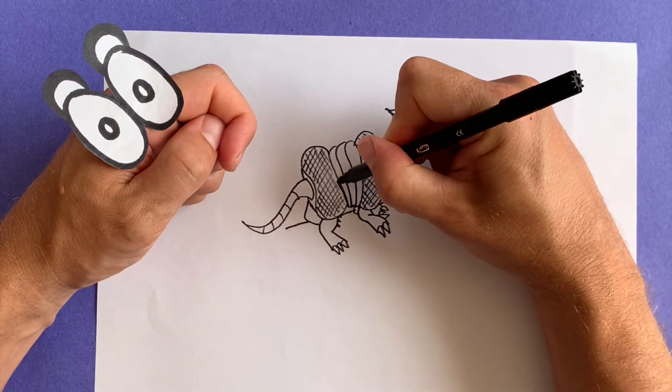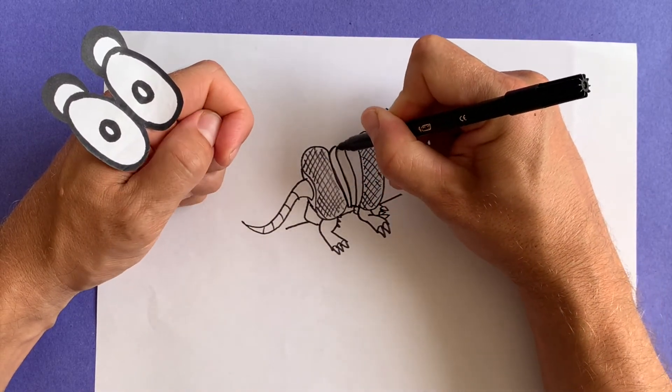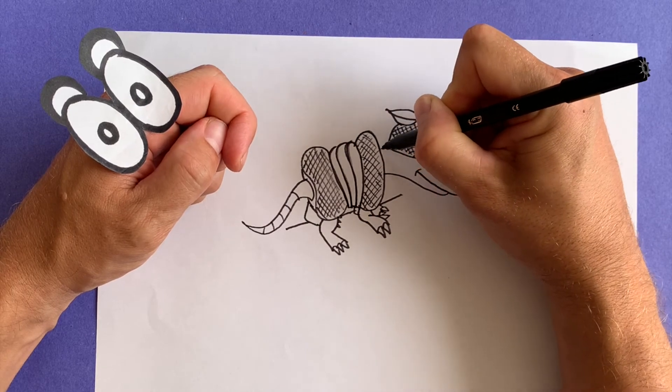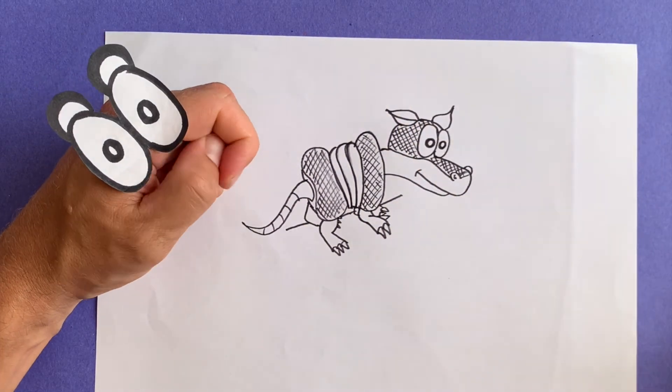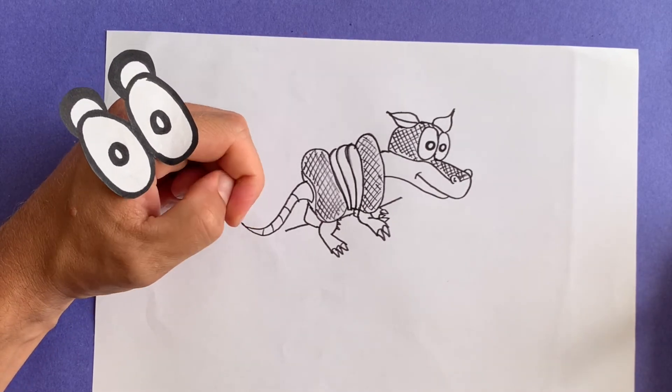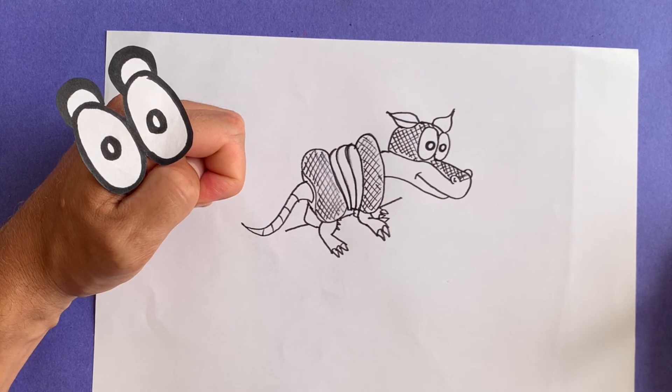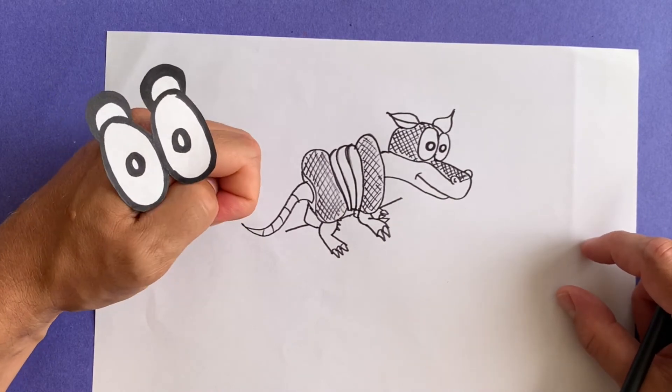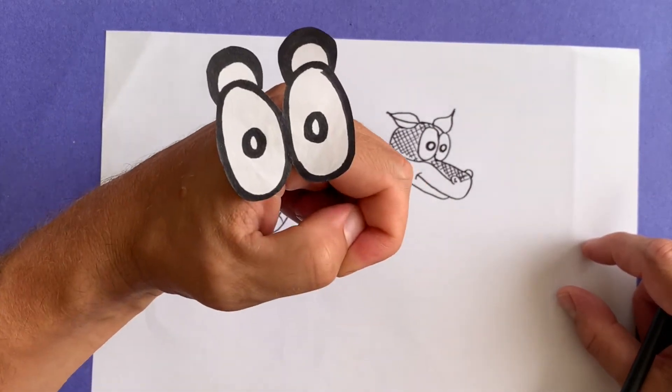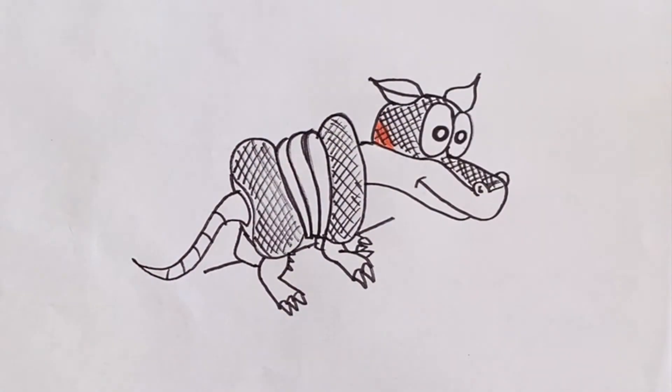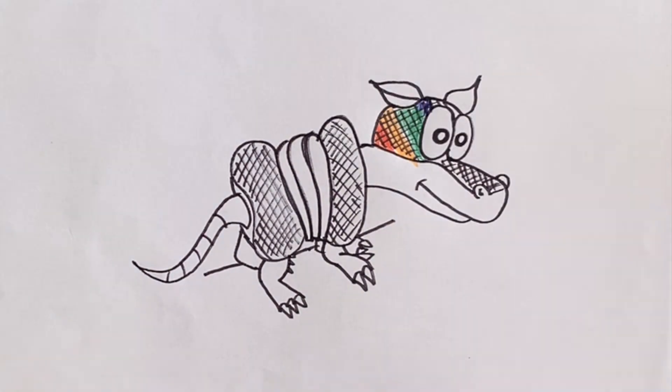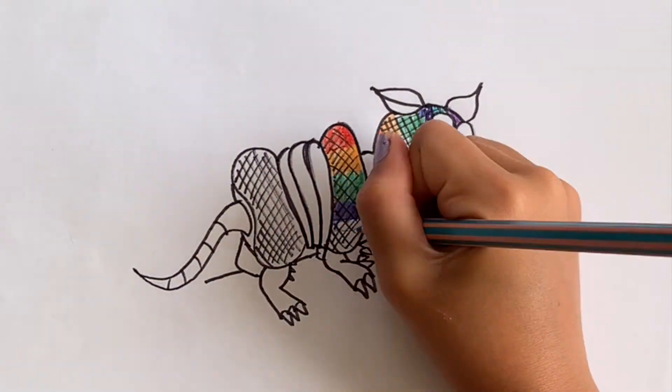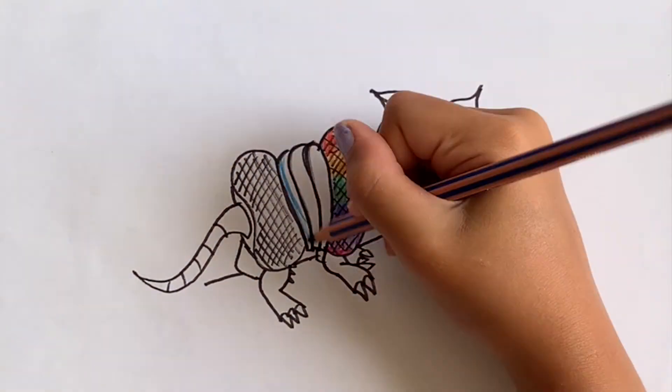And I think I'm just gonna darken these lines up a little bit to really make the armor pop. And that's gonna look really good. And I think I'm all done. Hmm, is there anything else I need to do? Don't forget to color! Oh, good idea, Handalina! How about you color? Ladies and gentlemen, for your viewing, Handalina will now color the armadillo. Bye!